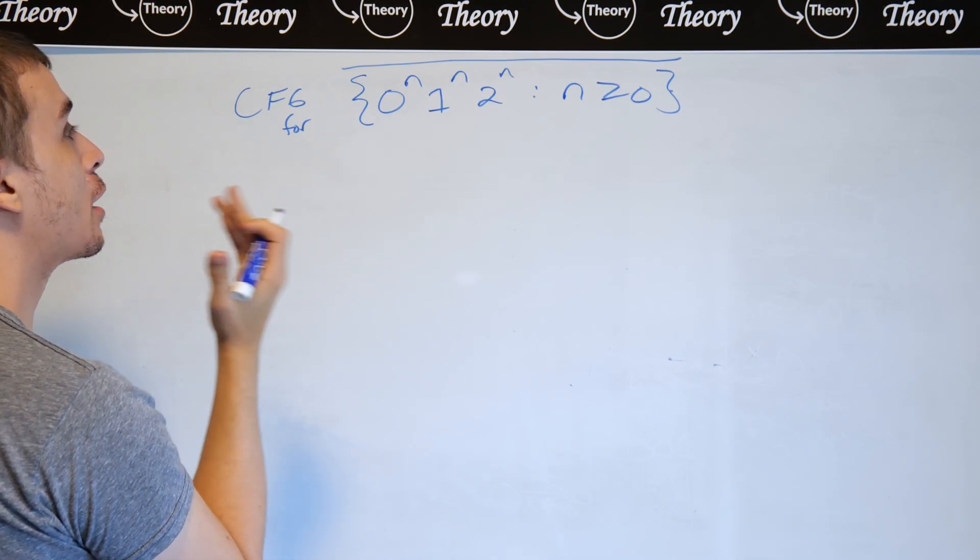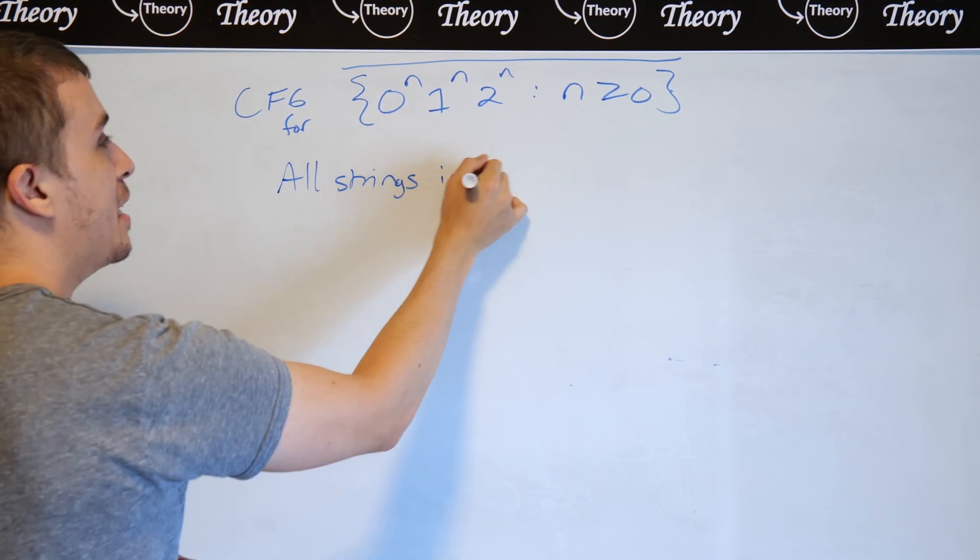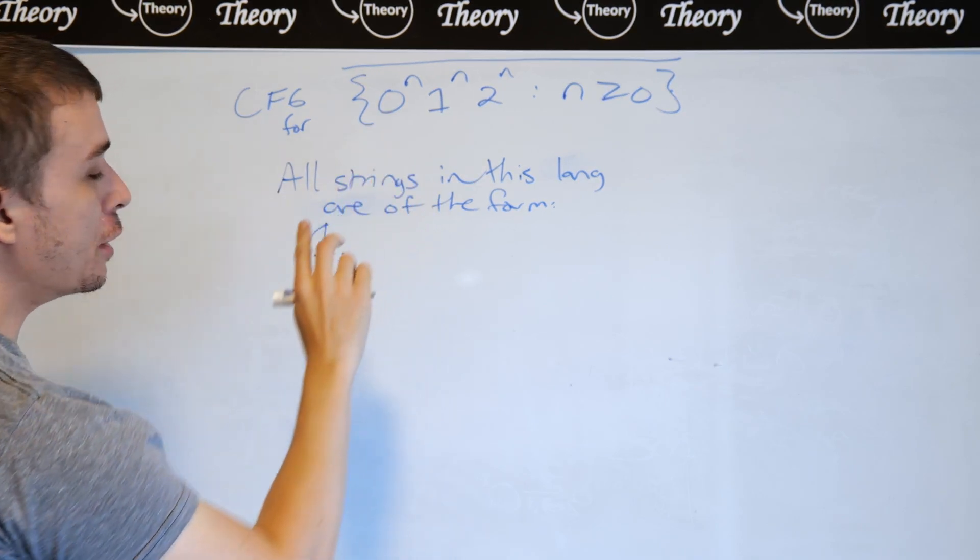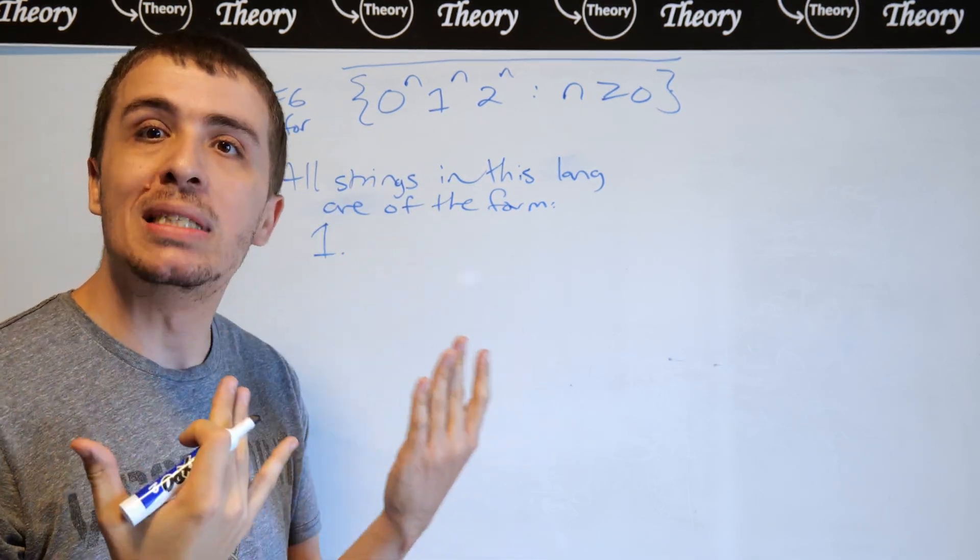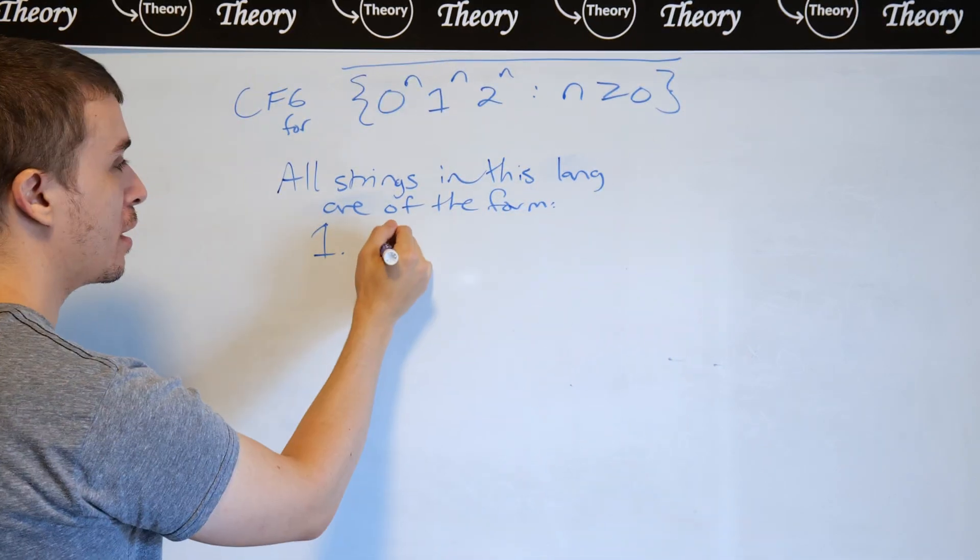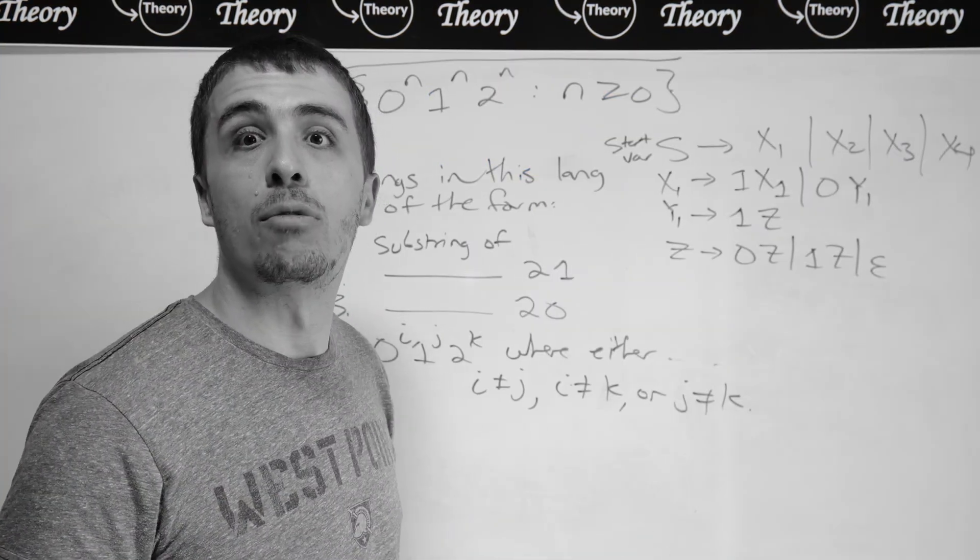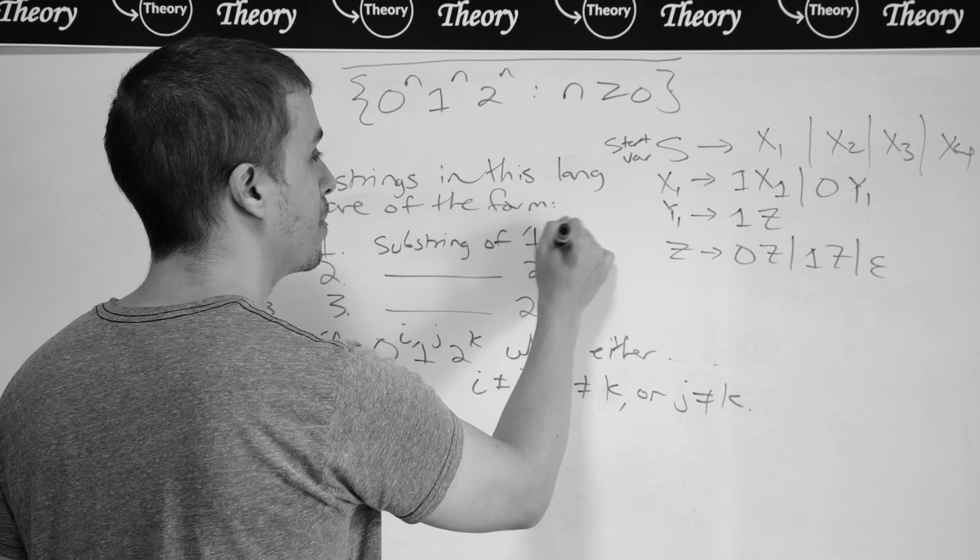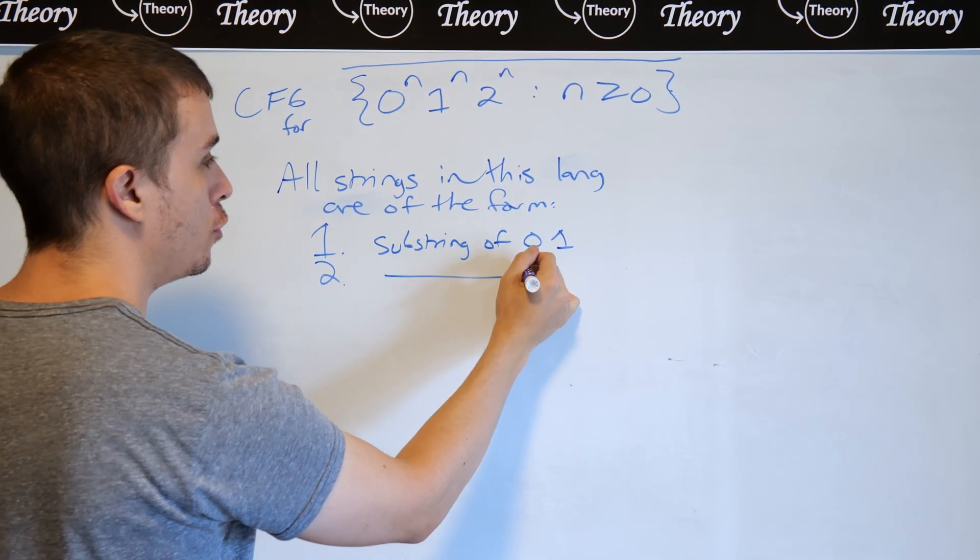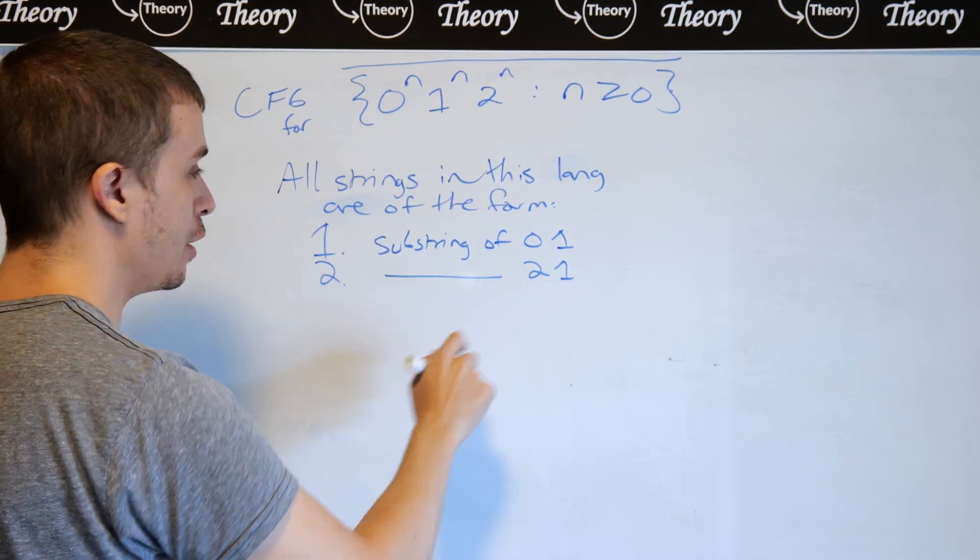So what do the strings in the complemented language look like? All strings in this language are of the form, and there are going to be quite a few here. So if the string that we're considering has a 1, 0 in it, it can't be of this form because it has 0s before 1. I just realized while recording this video I needed to say 1, 0 here, not 0, 1. That was my mistake. If it has a substring of 2, 1, because every string in the original language has 1s, then 2s, and this is in the wrong order.